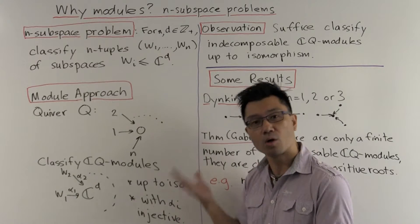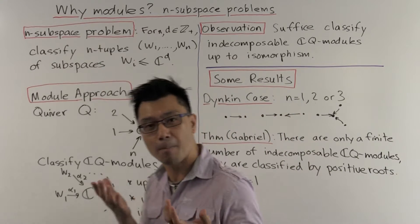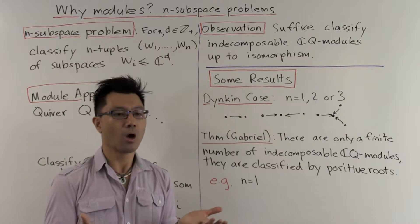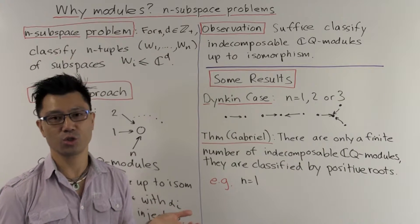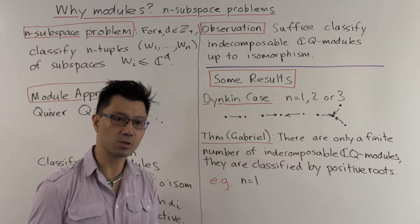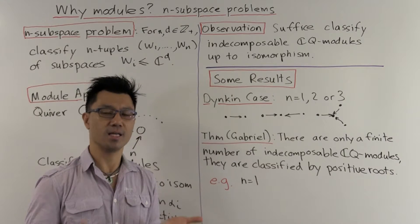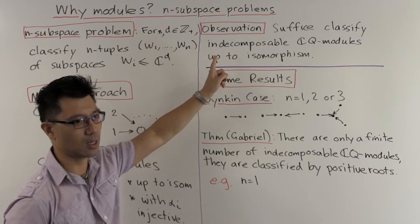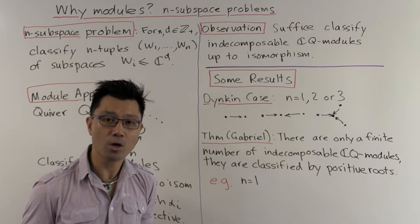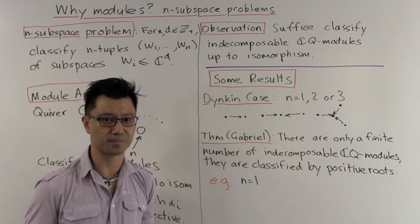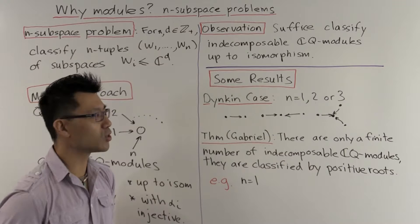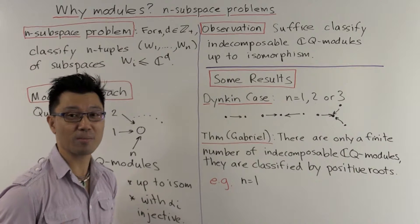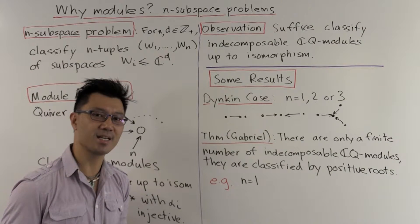The problem that we want to solve here is to find out all these CQ modules up to isomorphism which have this form. What does using module theory get us? Well, the first point to note is that when you're trying to study modules, especially ones of this form, all you need to do is to determine all the indecomposable modules, as every module is a direct sum of indecomposable modules.